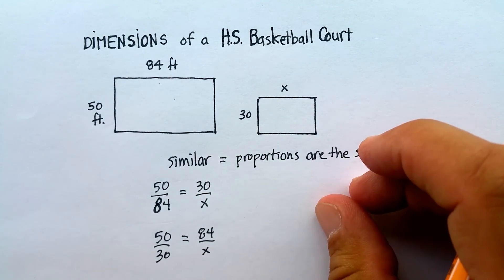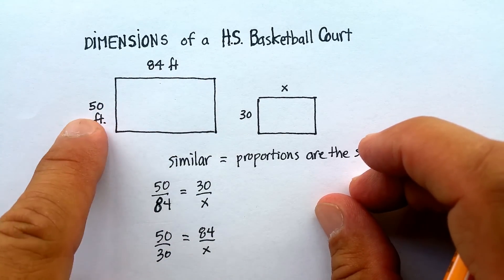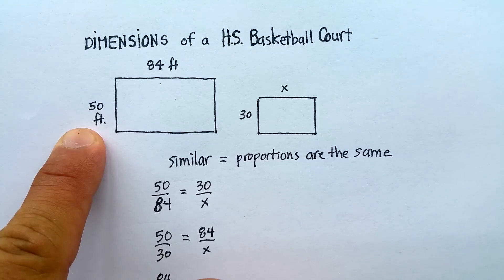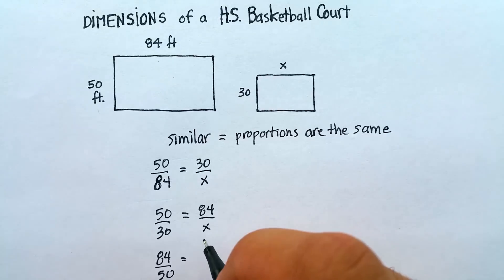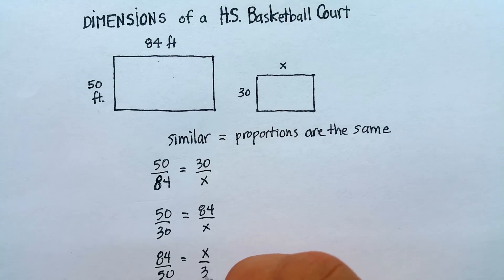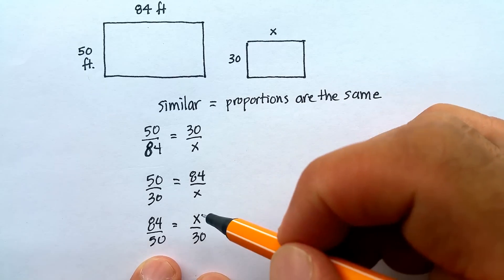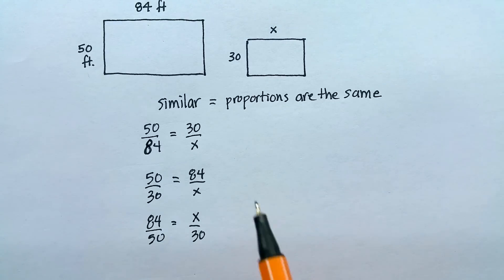I could also do, I could say 84 is to 50 as x is to 30. So the question I'm going to pose to you is, are all three of these proportions going to lead you to the same answer for x? And let's go ahead and give it a shot.